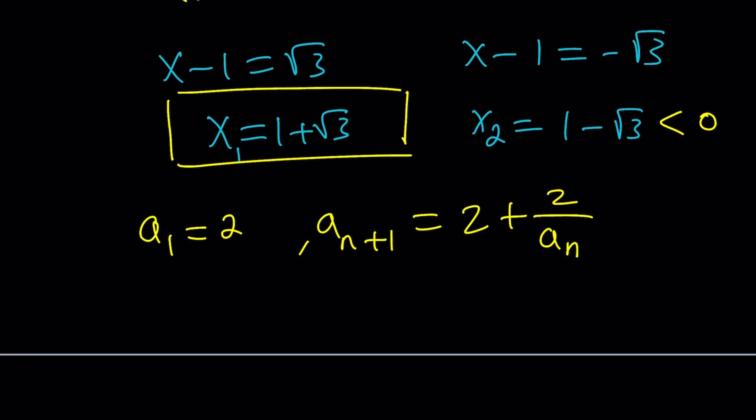In other words, if you take the limit on both sides, limit of a sub n plus 1 is going to equal the limit of a sub n as n approaches infinity. Make sense?